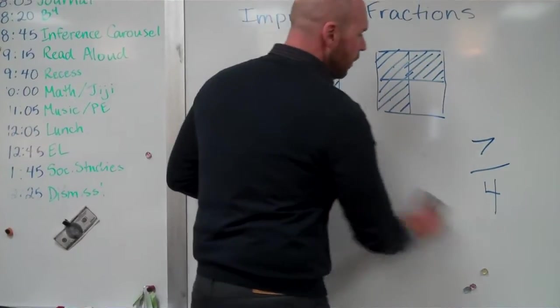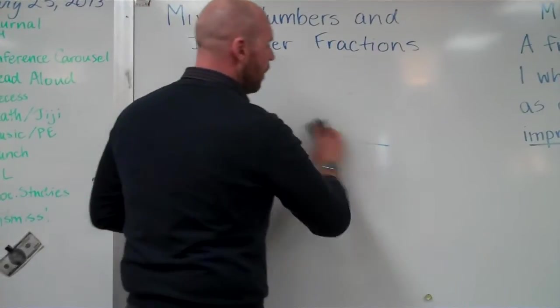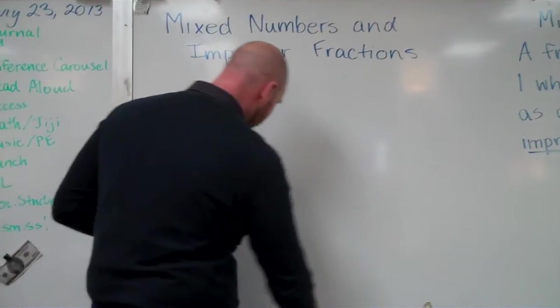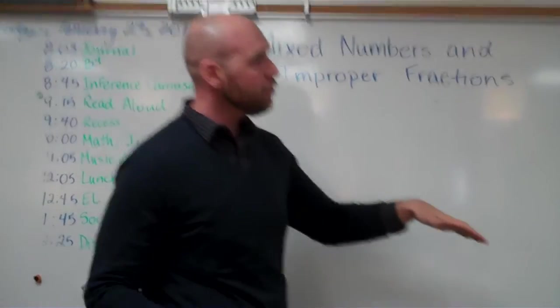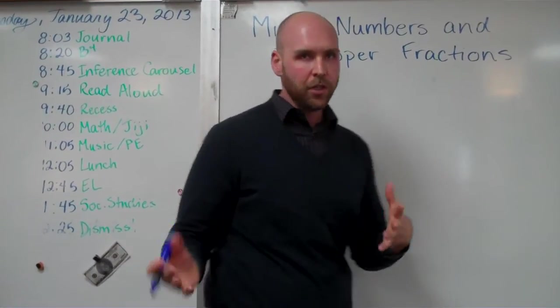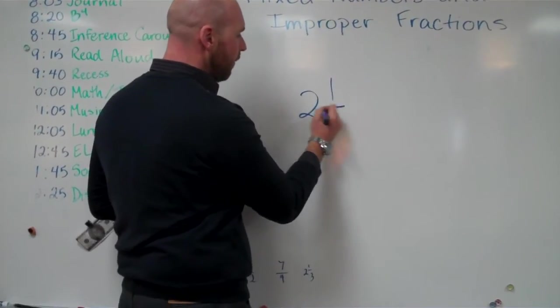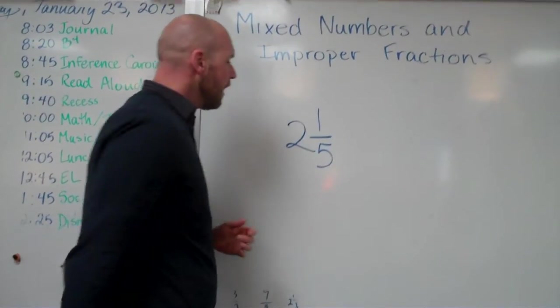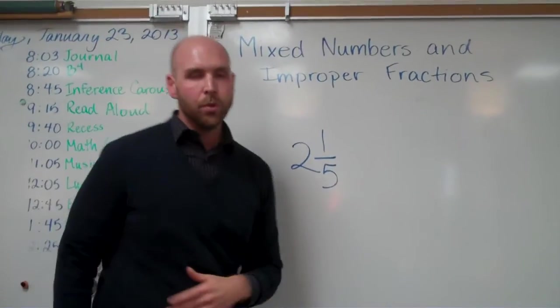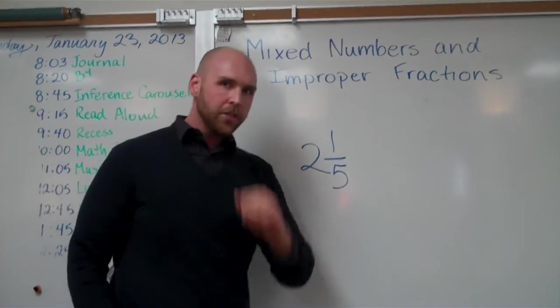Now, it's very easy to make these, to make an improper fraction into a mixed number or to make a mixed number into an improper fraction and I'll show you how. So take a really easy one, two and one fifth. Let's say I want to make this into an improper fraction instead.